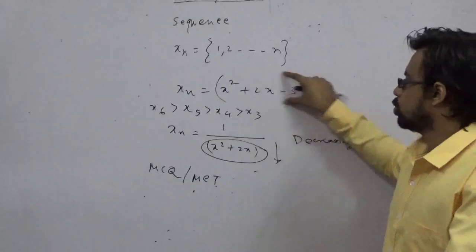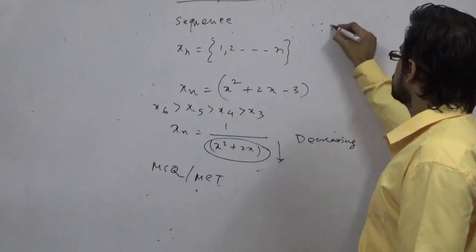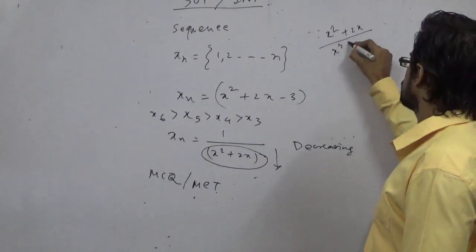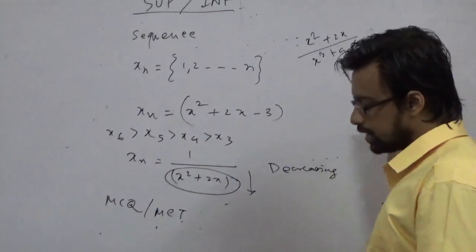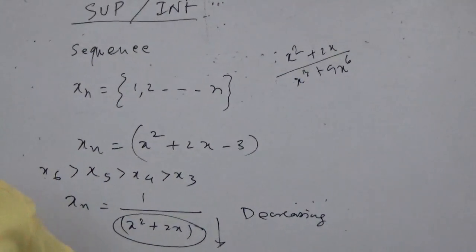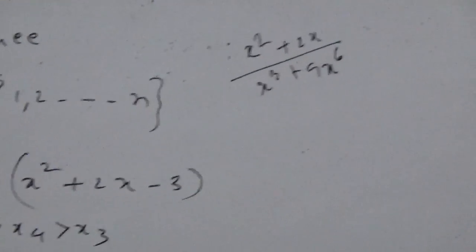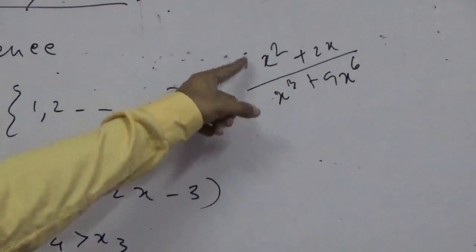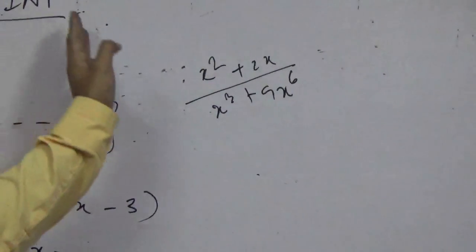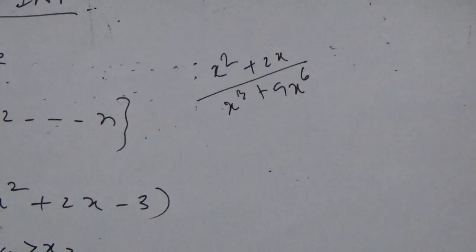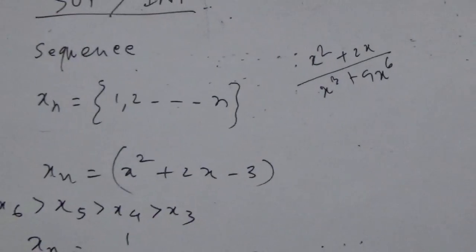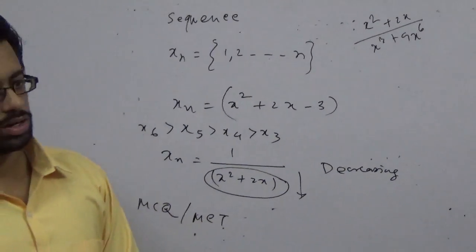And if everything is in the numerator, what happens if it is like x squared plus 2x divided by x cubed plus 9x to the power 6? Is it increasing or decreasing? Because both have x in the numerator and denominator. It is decreasing because the highest power in the numerator is 2 plus 1 equals 3, and in the denominator it is 6 plus 3 equals 9 — so the highest power of the numerator is less than the highest power of the denominator, making it a decreasing function.